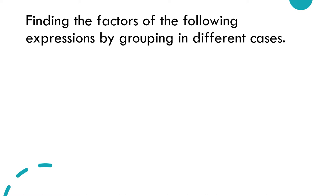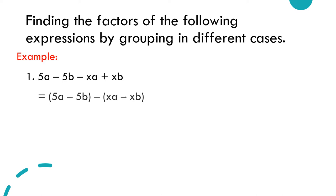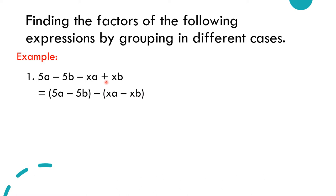Our first example is: 5a minus 5b minus xa plus xb. The very first thing we are going to do is group. Group the first two terms — 5a minus 5b — and the second group becomes negative xa plus xb, written as minus (xa minus xb). The operation is subtraction because distributing the negative gives negative times xa = negative xa, and negative times negative xb = positive xb.